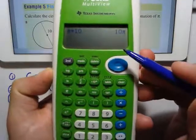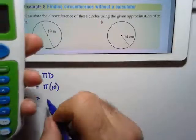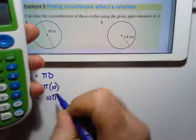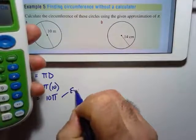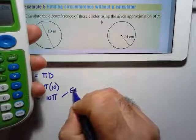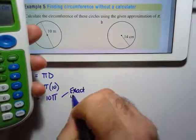If they ask you for an exact value, this is going to be 10π. This is called an exact value - that's an exact value because there's no approximation.